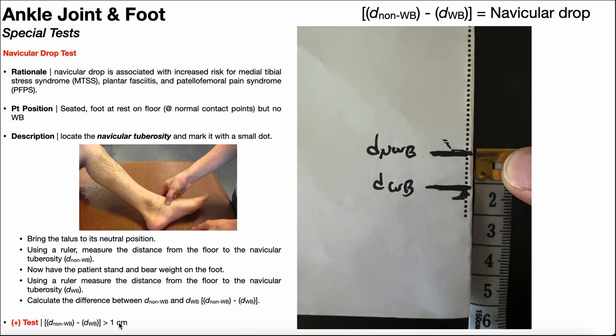And the more navicular drop you have, most likely the more subtalar pronation you also have and the greater risk you are at developing these conditions. So based on the fact that mine is about 1.1, 1.2 centimeters, I do have a slightly excessive navicular drop and I would be at increased risk for these conditions. I can tell you I've actually had in the past a little bit of patellofemoral pain syndrome.